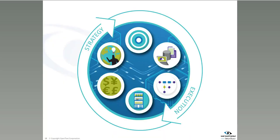We define the strategies using our ProVision product, which is really an enterprise architecture and business process analysis tool to let you understand your business — all your different assets, define the strategy, align it to your business goals — and then with our execution platform, give you the ability to run the process application and then measure the performance and understand how you can improve that process over time.